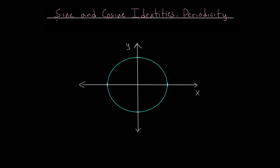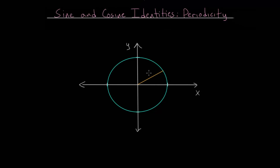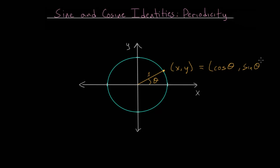In this video I'd like to talk about the sine and cosine identities involving periodicity. We have the unit circle here where the radius is equal to 1. On the unit circle we have the x-y coordinate along some point on the circle. The x coordinate is the cosine of the angle theta, measured positively counter-clockwise from the x-axis and negatively if we go clockwise. The y value is the sine of the angle theta.